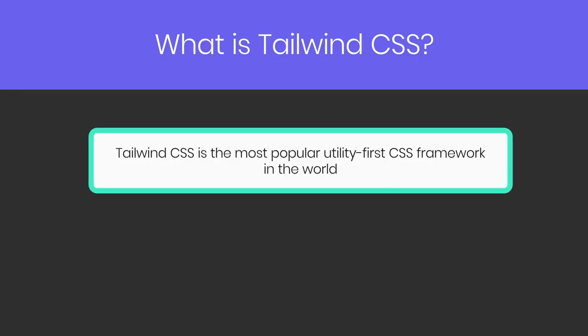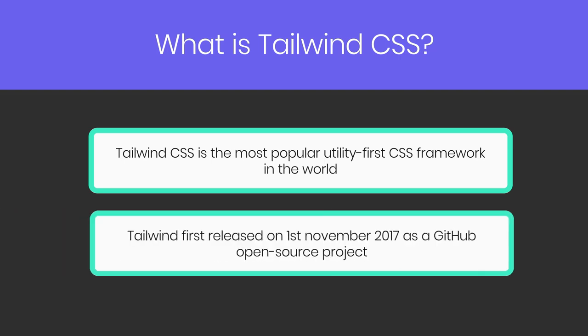So what is Tailwind CSS? Tailwind CSS is the most popular utility-first CSS framework in the world for rapidly building custom user interfaces for the web. Tailwind was released on 1st November 2017 on GitHub as an open source project. By the beginning of August 2020, it is estimated that it was downloaded over 10 million times, making it one of the most rapidly growing CSS frameworks in the world at the time.